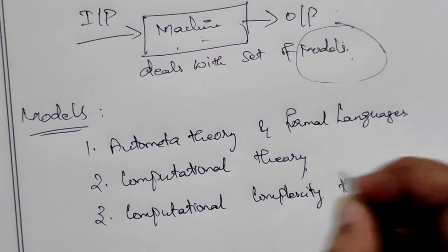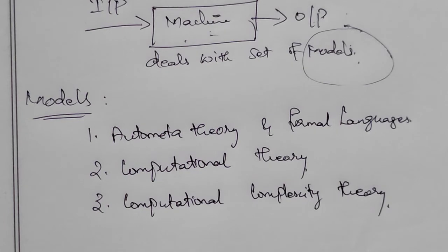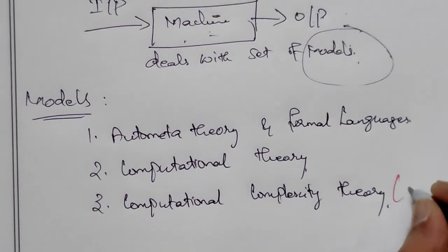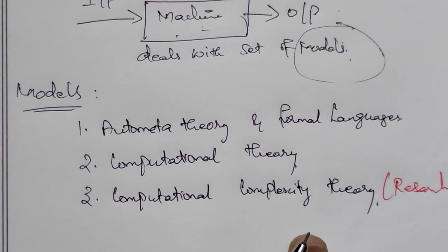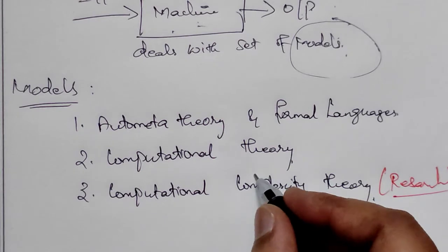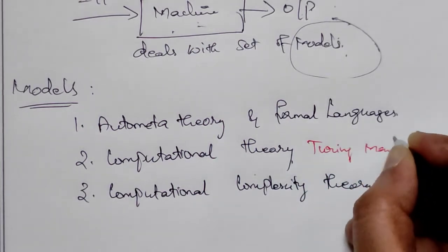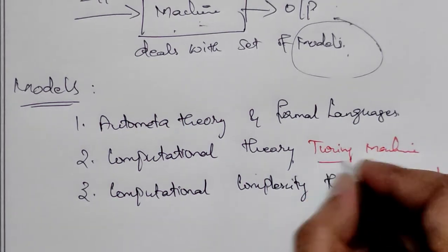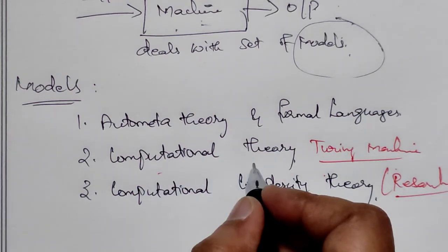The third model is a major model in theory of computation. In Computational Complexity Theory, for very complex problems, most research people use this. Turing Machines, discovered by Alan Turing, come under Computational Theory.